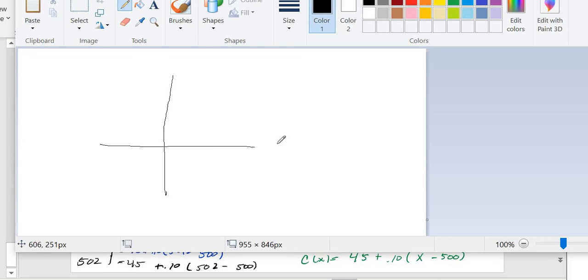My graph only starts with 0. Up to 500 it's going to be a flat fee, so it's going to be a flat fee of 45 until I reach 500. So that's my 45.